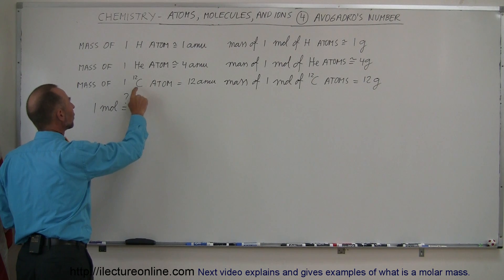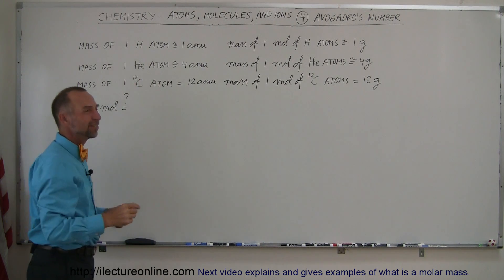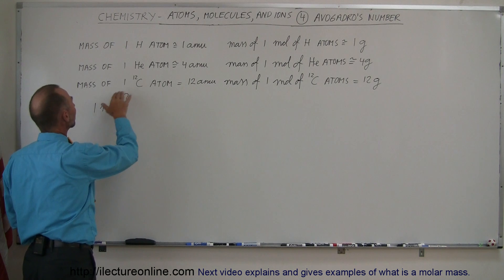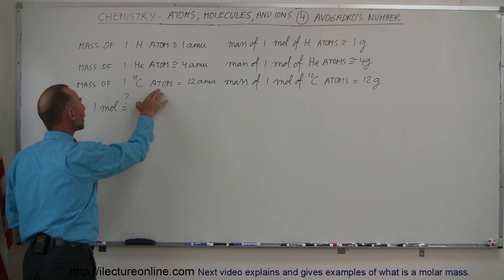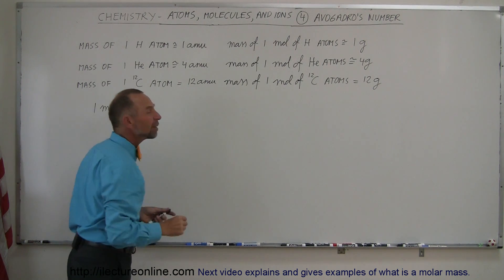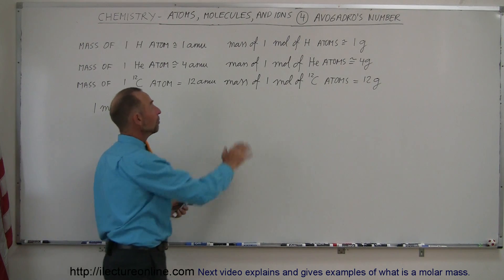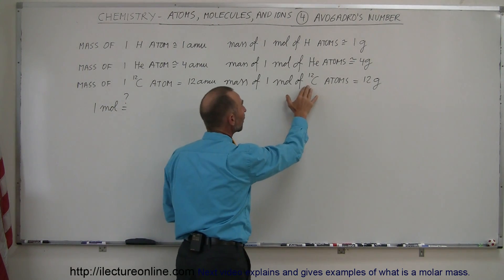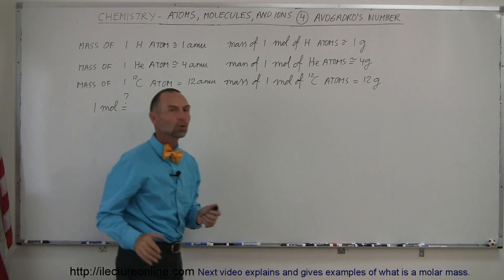For carbon atoms, if they are carbon-12, which means they have six protons and six neutrons, the mass of a single carbon-12 atom is exactly equal to 12 AMUs by definition. And the mass of a mole of carbon-12 atoms has a mass of exactly 12 grams.